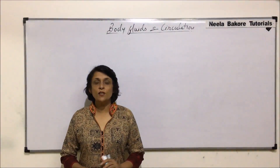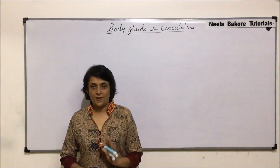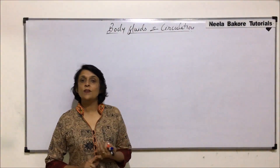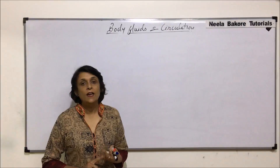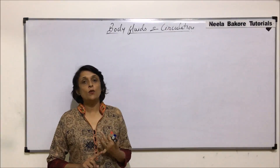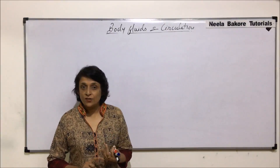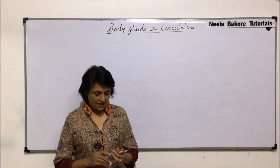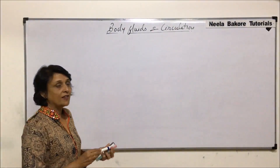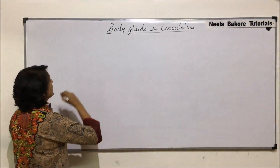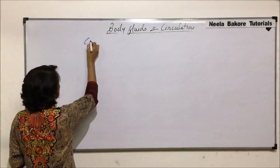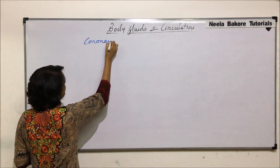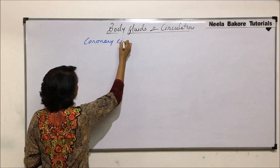In this section, we will talk about three things: coronary circulation, arteriovenous anastomoses, and vasa vasorum. Let us start with the first thing, that is coronary circulation.